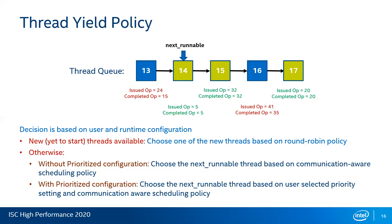Through the communication-aware thread scheduling policy, we detect the next runnable thread by looking at performance counters, which tell us which thread currently has all pending operations completed. In this thread queue, we store all this information and do a linear scan. Some threads have already matched the issued operation count to the completed operation count, while others are still waiting. Based on these values, we decide which thread can be selected as the next runnable thread.